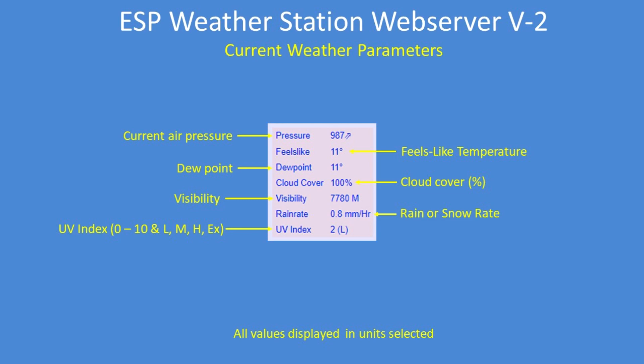For the current weather parameters: current air pressure in hectopascals or inches. The feels-like temperature, which is a function of wind speed. The dew point, which is a function of temperature and humidity. Cloud cover in percentage terms. Visibility in metres or yards. The current rain rate or snow rate — it will vary depending on whether it's raining or snowing. And the UV index from 0 to 10, classified as low, medium, high, or extremely high. All units are displayed depending on whether you've selected imperial or metric.